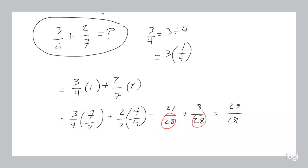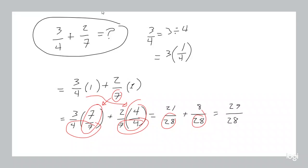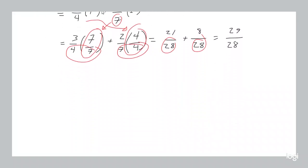So how did I get the same denominator there? Well I multiplied the first fraction by 7 over 7 because the opposite denominator is 7. And I multiplied the second by 4 over 4 because the opposite denominator is 4. As a result I get a 7 times 4 in both terms, and that gives me my common denominator.